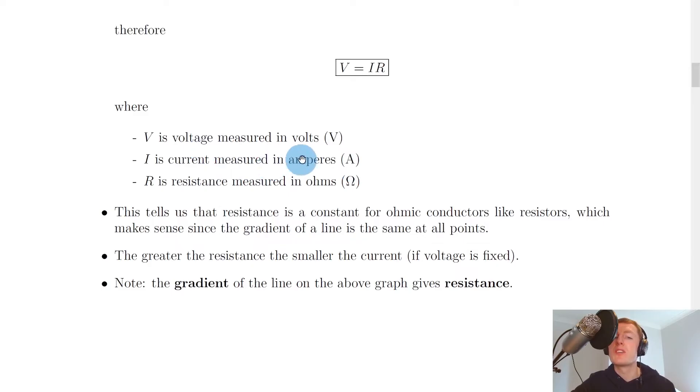Where V is voltage measured in volts, I is current measured in amperes, and R is resistance measured in ohms. This equation will come in handy for lots of the questions that you'll see for the electricity topic.